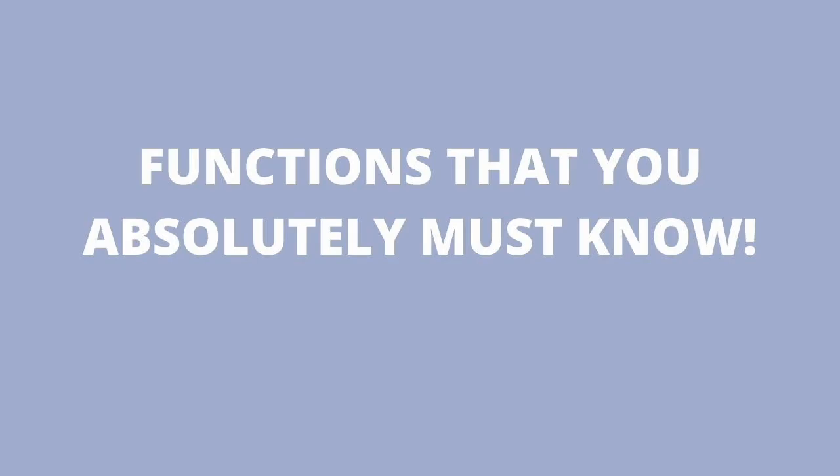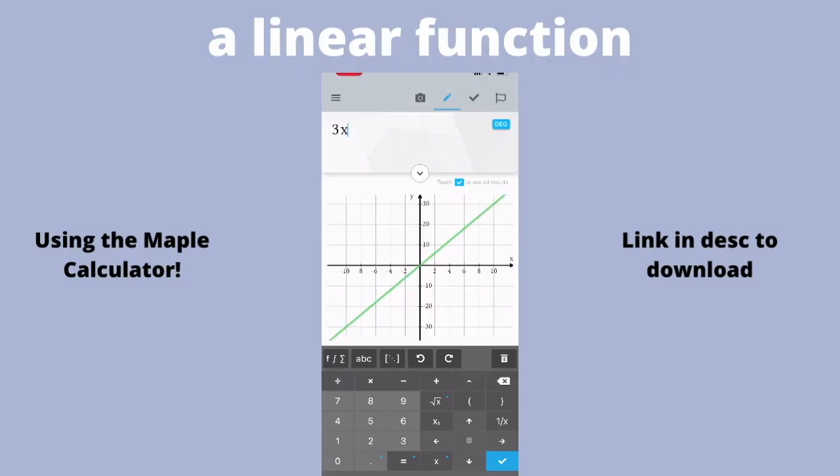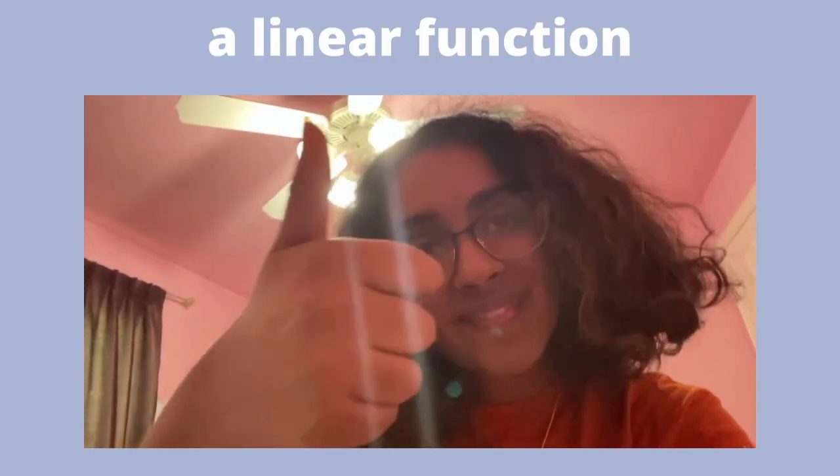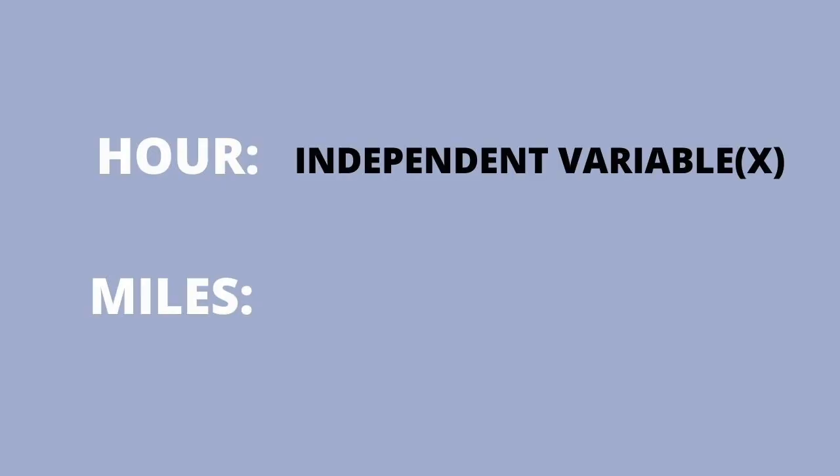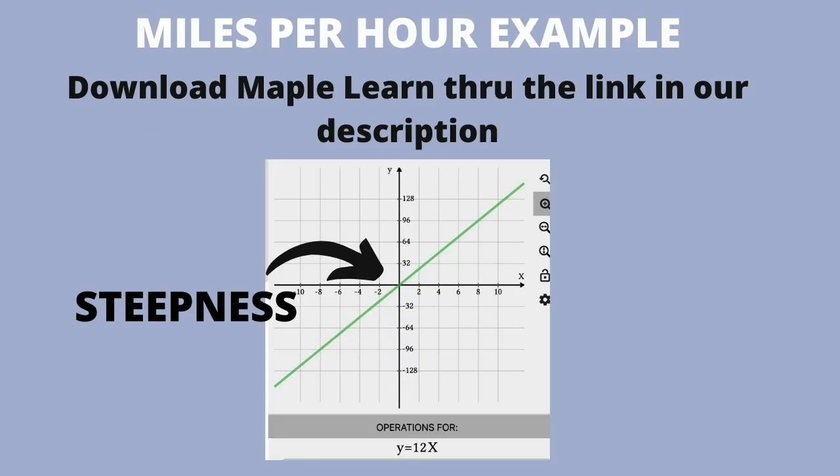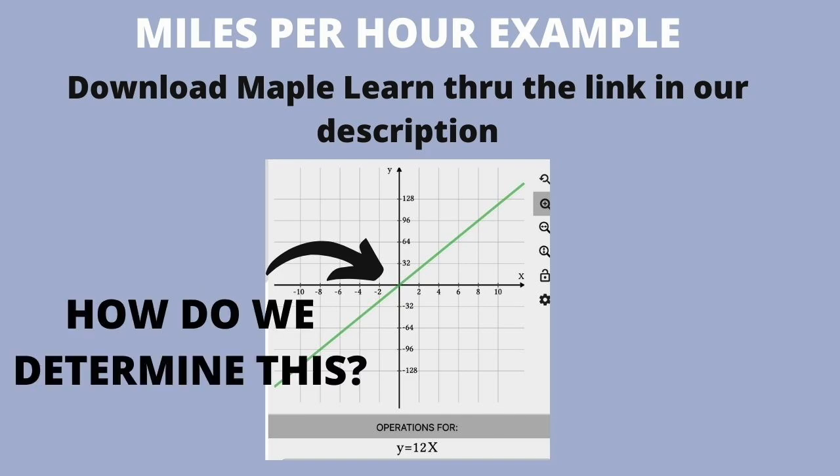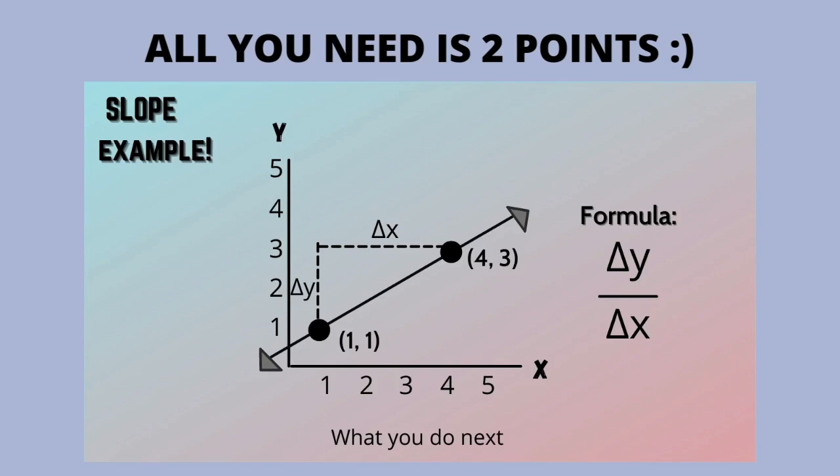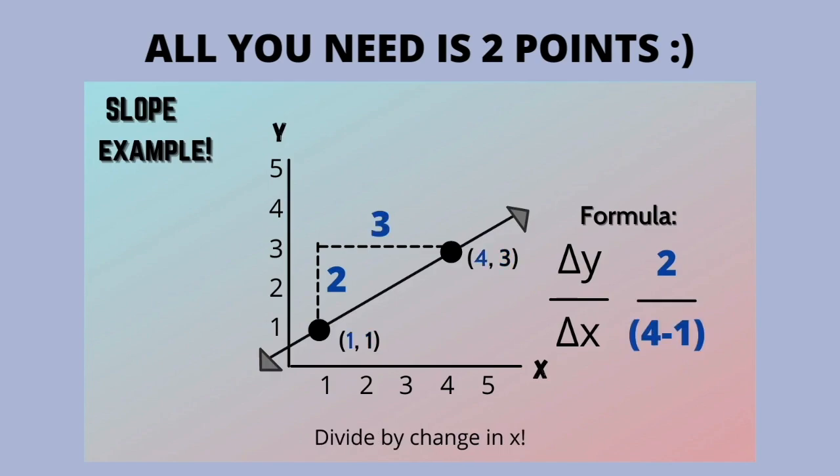Let's get into the main functions you should know for Algebra 1. The first is a linear function—a straight line. You're familiar with miles per hour: hour is the independent variable and miles is the dependent variable. The relationship between these can be represented as how steep a linear function is. How do we determine steepness? It's called slope: take the change in y divided by change in x.